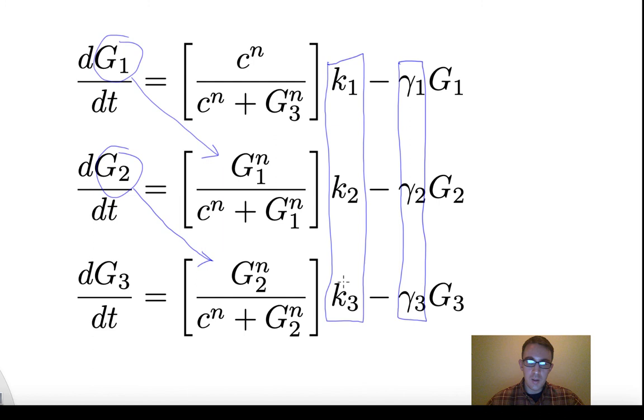Gene three will come back around and inhibit gene one. This is the negative feedback we were talking about. This is our repression Hill function here. As we get more and more of gene three, this will start at one when we have zero of gene three—it'll be c^n over c^n, so it'll be one times K1. But as we get more gene three, this approaches zero. Eventually that'll be almost zero times our production rate. That's where the repression comes in.